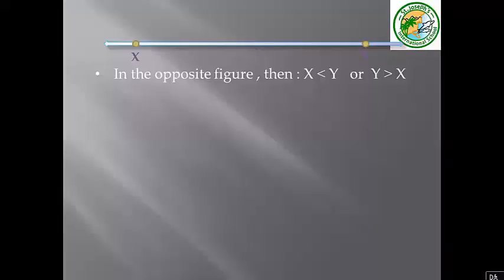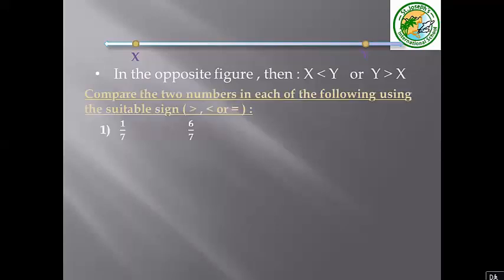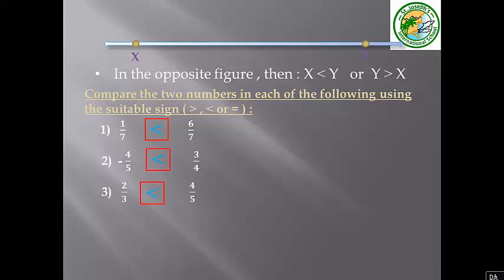Comparing rational numbers. On the number line, numbers on the right are bigger than numbers on the left. Exercise: 1 over 7 or 6 over 7 — 6 over 7 is bigger. Negative 4 over 5 or 3 over 4 — 3 over 4 is bigger. 4 over 5 is bigger than negative values. Negative 5 or negative 5.1 — negative 5 is bigger. 11 over 12 or 11 over 15 — 11 over 12 is bigger.